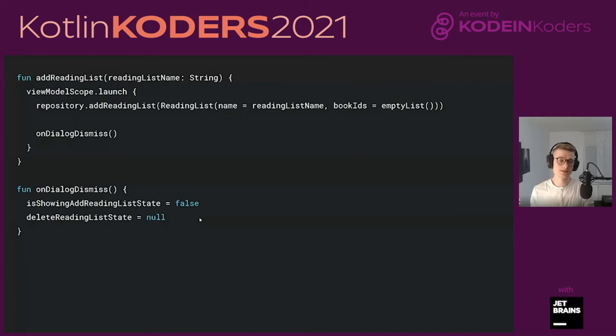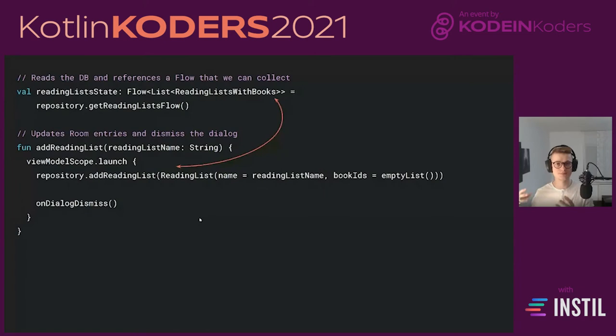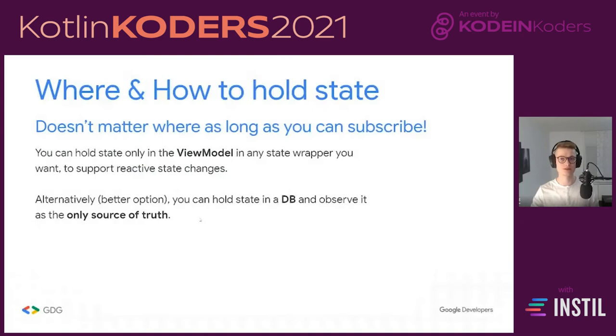When adding a new reading list, we update the repository by calling addReadingList, dismiss dialogs by resetting isShowingAddReadingList to false and deleteReadingList state to null. We add something to the database and because we're observing Room, we get an automatic update. Finally, we update local dialog states to remove all dialogs. As soon as the flow in the database updates, we get a new update, everything recomposes, and everything works out of the box — really simple, clean, and easy to think about.